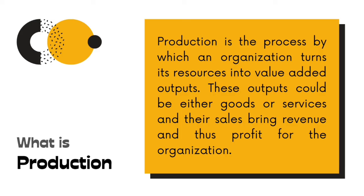To summarize production in a way that includes both goods and services: it is the process by which an organization turns its resources — that is, raw materials or any input resources, including labor — into some value-added output. You have inputs, you subject them through a process, and you turn them into a value-added output. These outputs could be goods or services, and the sale of this output is what brings revenue to the organization, and from revenue comes profit.